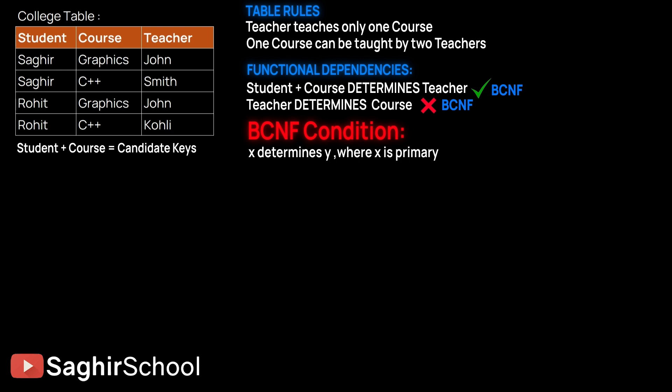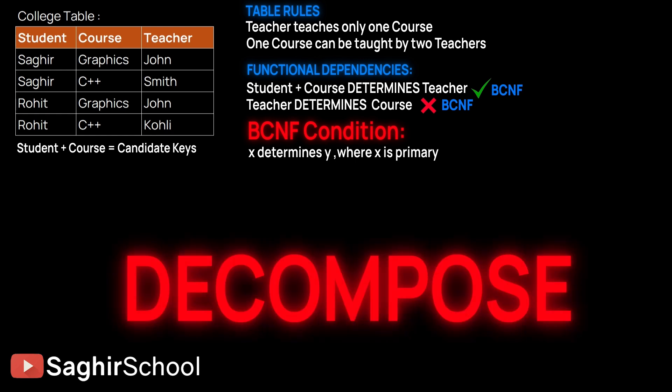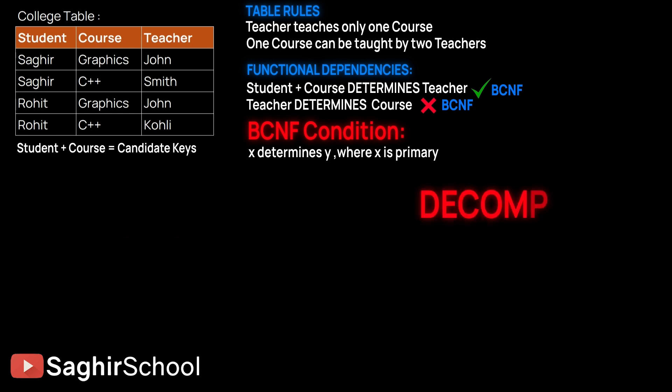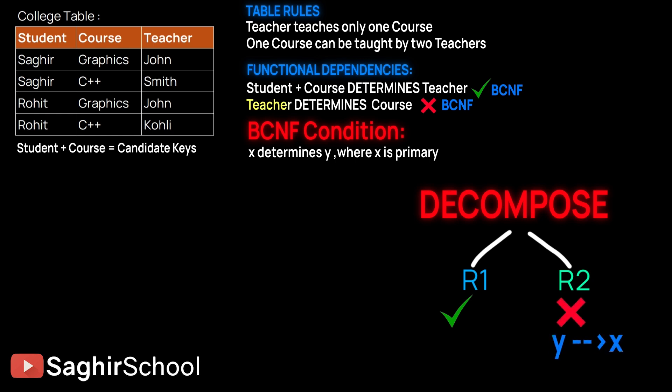The condition for BCNF is that X determines Y, where X must be a primary key. Our table violates this because teacher is determining course. To fix this, we decompose the table. BCNF decomposition has a rule: we split the given table into two tables, R1 and R2, where R2 contains the attributes involved in the problematic functional dependency — teacher and course.